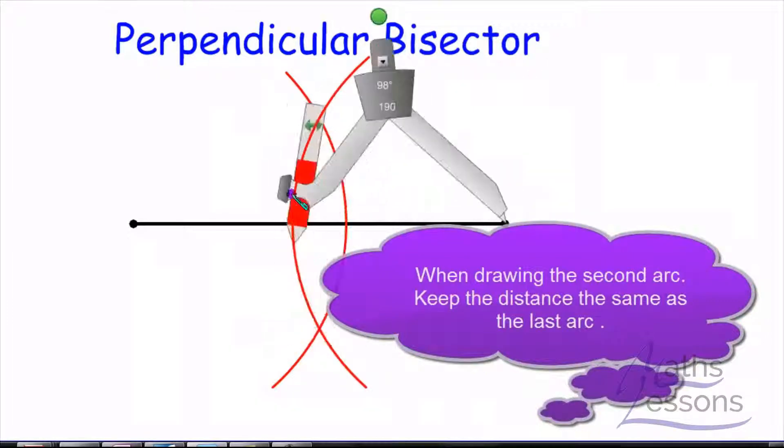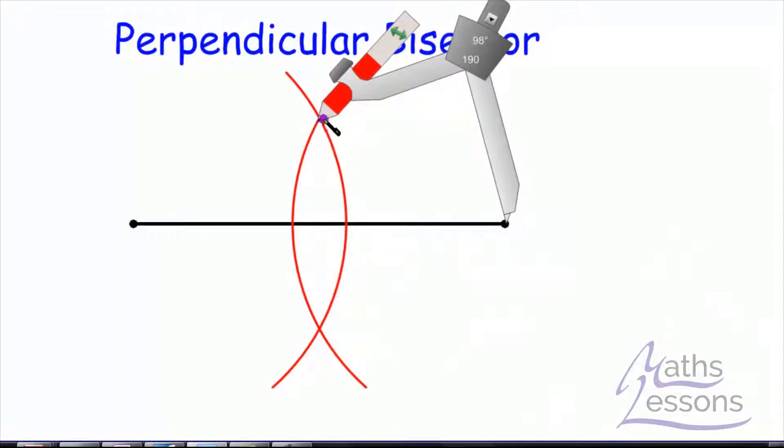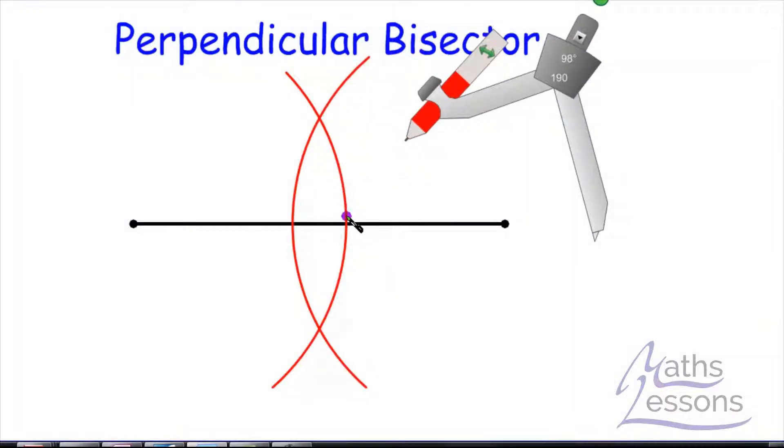Notice I didn't change the length of the compass, the distance from the pen to the point. That is very important, this line here from this point must be the same distance as this line from here because now this point here is equal distance to this here.